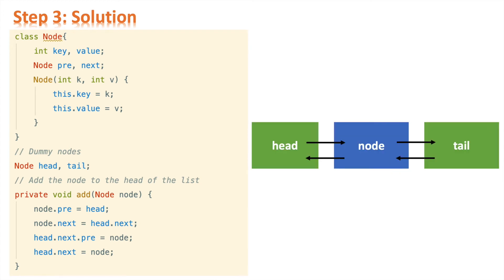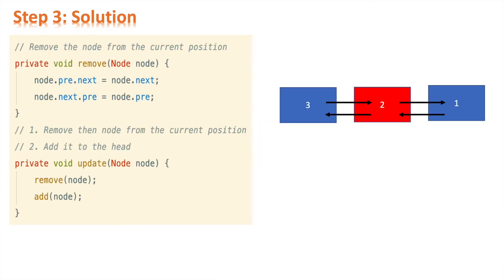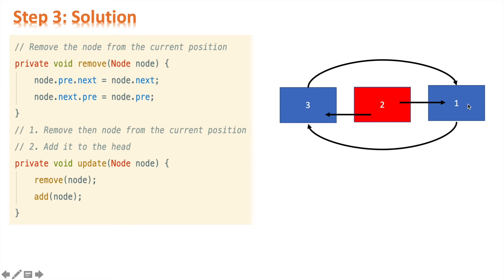Then comes the remove function, which removes a node from its current position. node.pre.next = node.next means node 3 points to node 1 instead of node 2, and node.next.pre = node.pre means node 1 points back to node 3 instead of node 2. Now 3 and 1 are connected to each other, which means we've removed node 2 from the list.